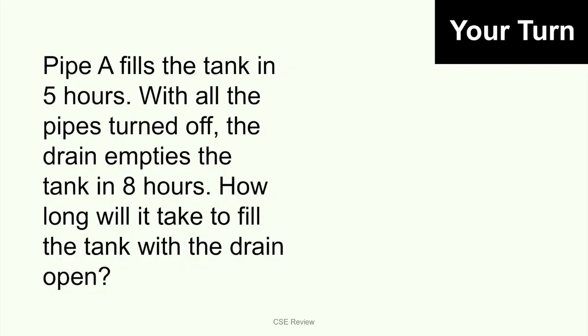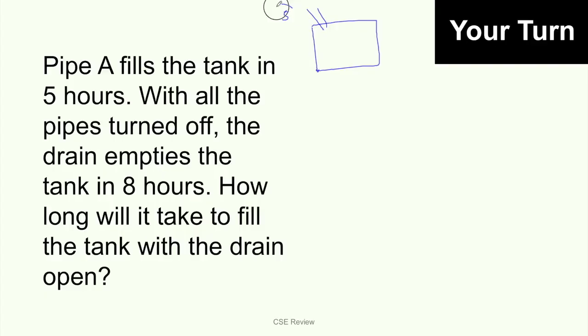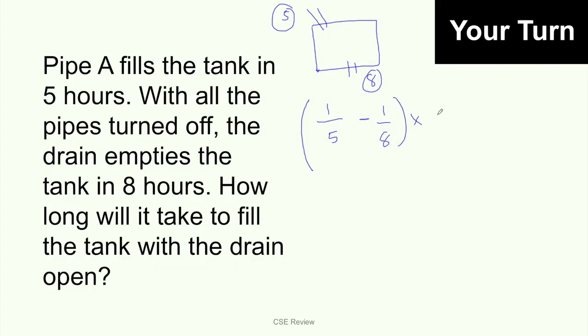All right, let's see how you did. If it took you extra time on the first try, that's okay — try and try again until you get faster. So let's look at our drawing: you have pipe A, which takes 5 hours, and a drain that empties in 8 hours. So our equation should look like this: 1/5 minus 1/8 times x is equal to 1. That becomes our equation.